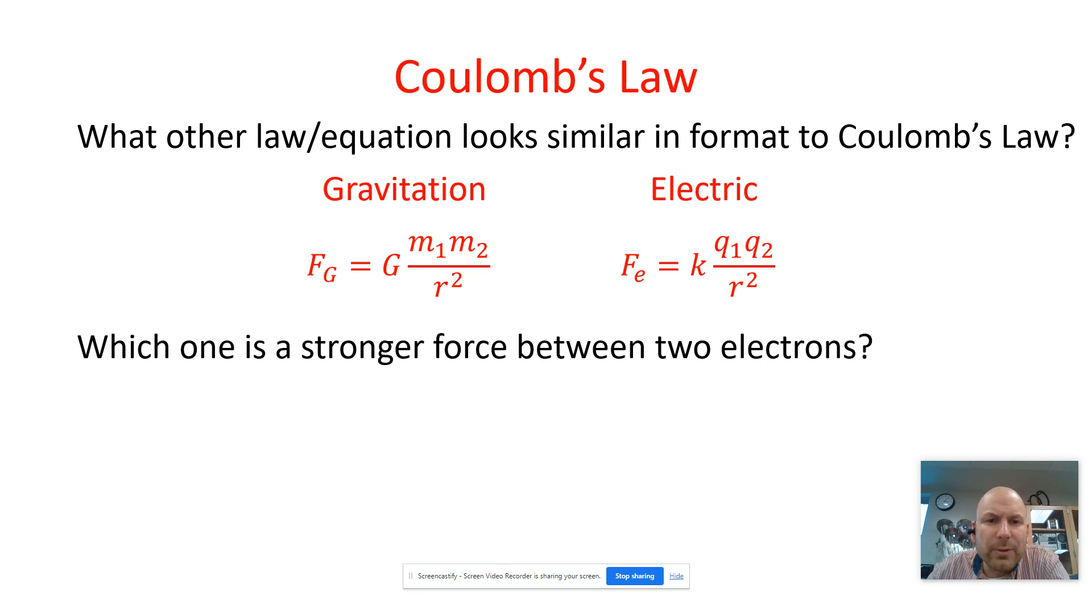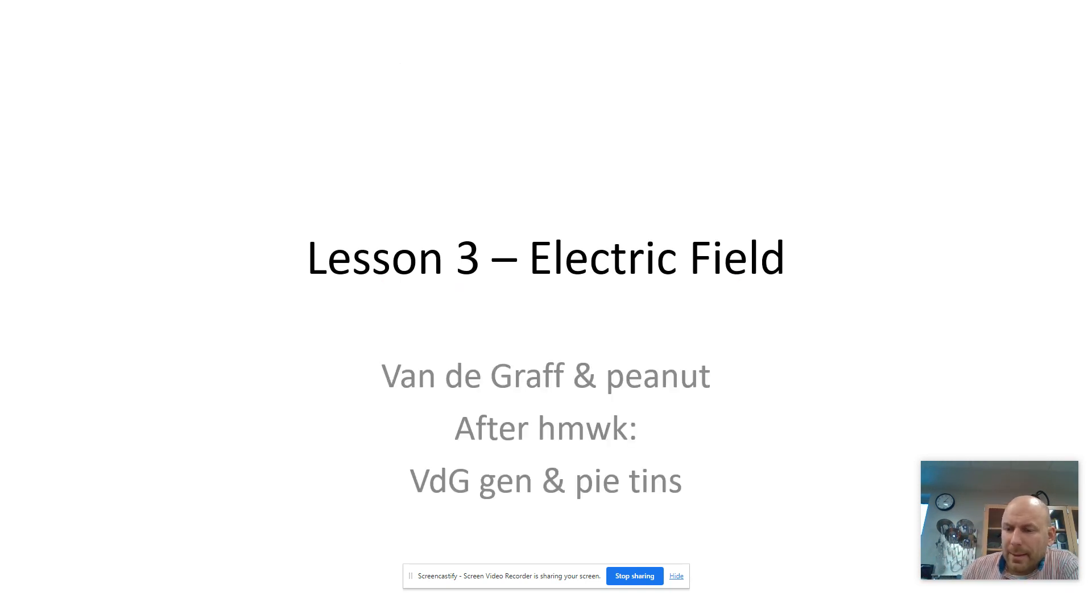So you've got two forces, which do you think is stronger, gravitation or electric? Electric. Because the constant is multiplied by 10 to the positive ninth versus G is to the negative eleventh. So this is a huge number. This is a really small number.